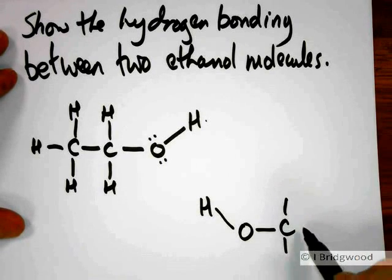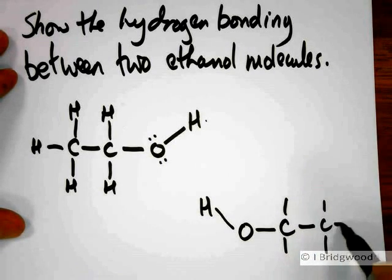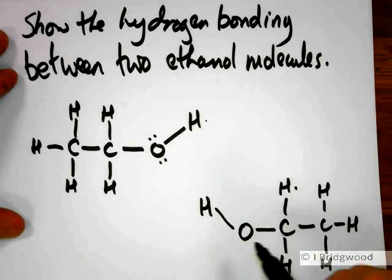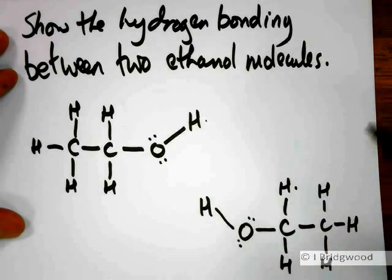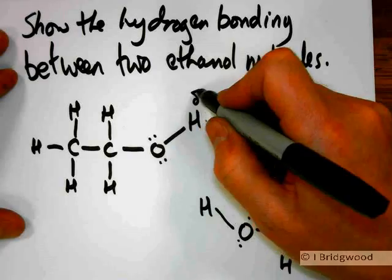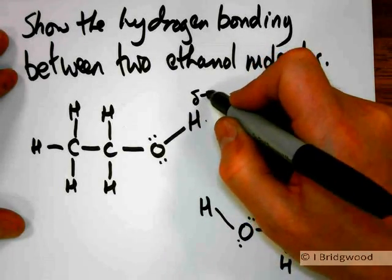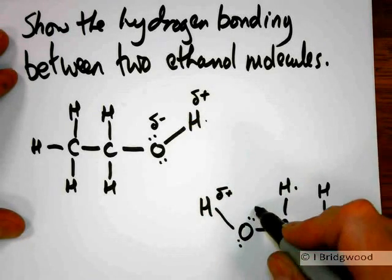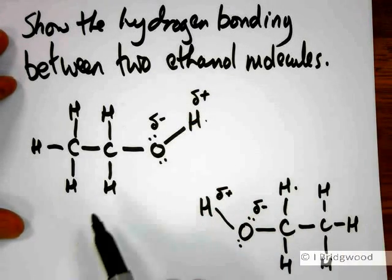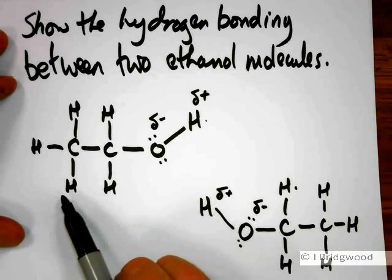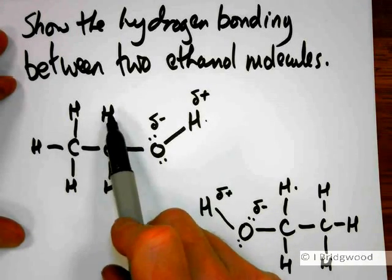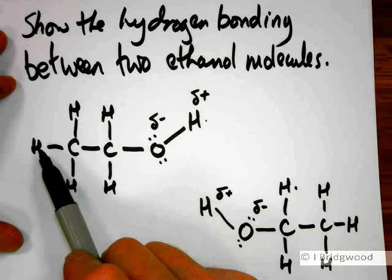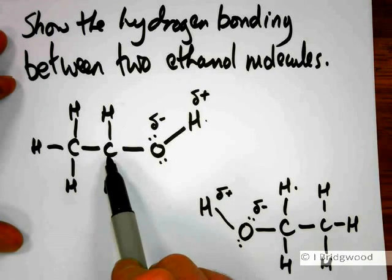Here is our ethanol. With two ethanol molecules we have all the requirements that we need. There's a delta plus charge on the hydrogens and a delta minus charge on the oxygens. Notice these hydrogens cannot hydrogen bond — the reason for that is because they are not attached to an electronegative element.